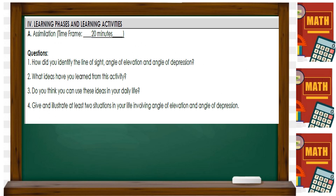For your assimilation, express how you understood the lesson this week. Answer: how did you identify the line of sight, angle of elevation, and angle of depression? What ideas have you learned from these activities — just the difference between elevation and depression. Then, do you think you could use these ideas in your daily life? Give and illustrate at least two situations involving angle of elevation and depression.